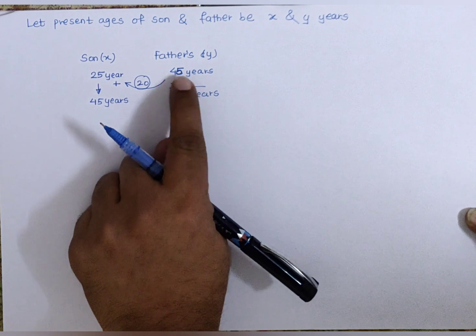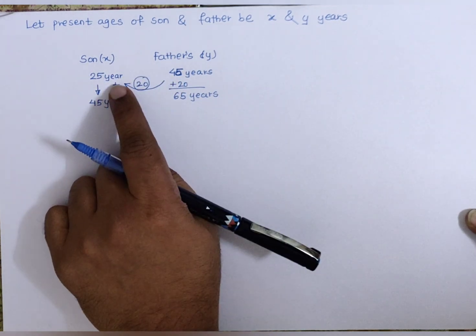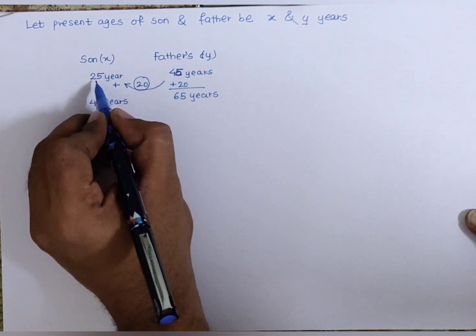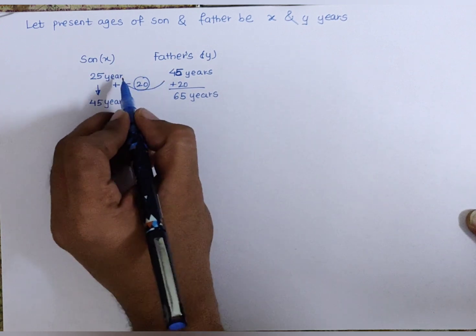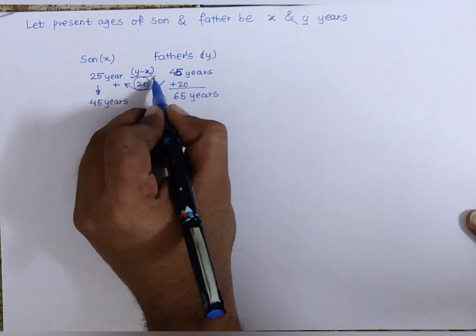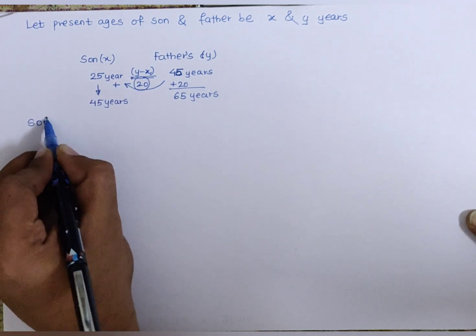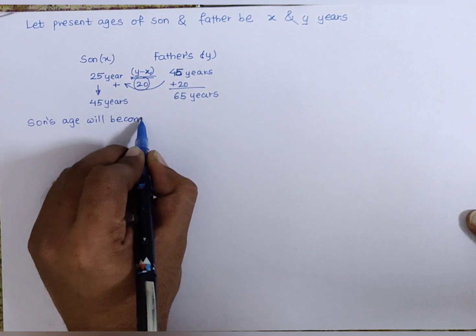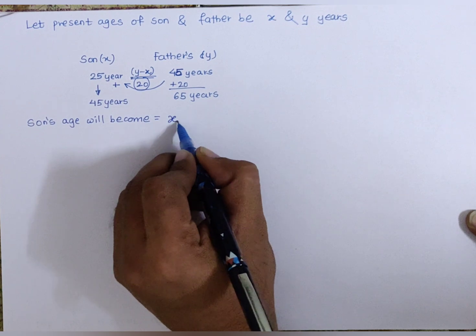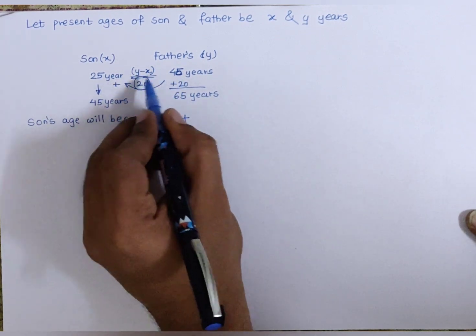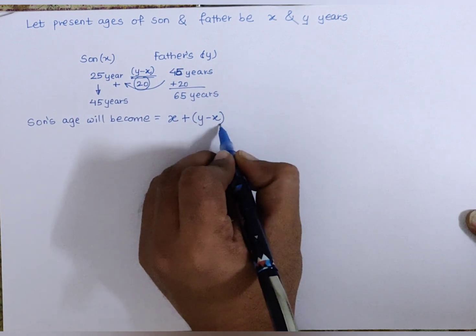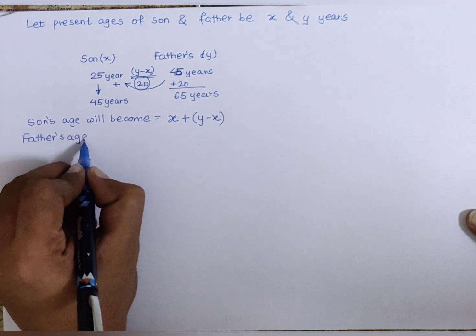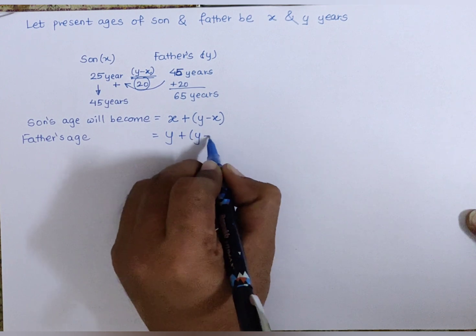So I have added the difference of their present ages. Accordingly now, the present age of father is y years and present age of son is x years. So I will add y minus x years. The son's future age will become his present age x plus the subtraction of their ages which is y minus x, and father's age becomes y plus y minus x.